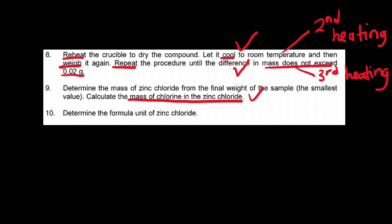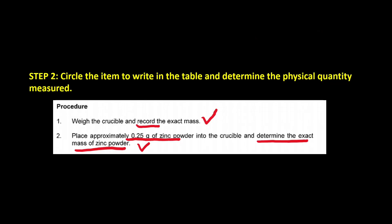Also take note of this step. In step number one we already identified the steps which require us to record the physical quantity. Now we just need to refer back to those steps and circle the items of interest and determine the physical quantity that we would like to record. For example, in step number one the item that we are interested in is the crucible and the lid, and we would like to record their mass. The second item that we are interested in is zinc powder, crucible, and the lid, and we also want to record their mass.